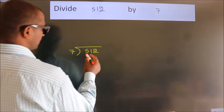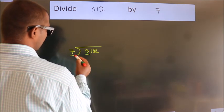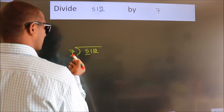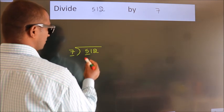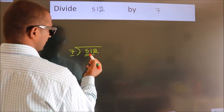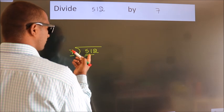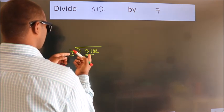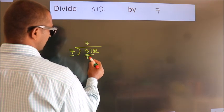Next, here we have 5, here 7. 5 is smaller than 7, so we should take 2 numbers, 51. A number close to 51 in the 7 table is 7 sevens, 49.